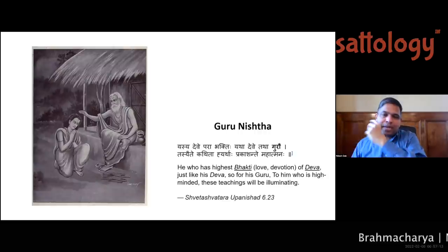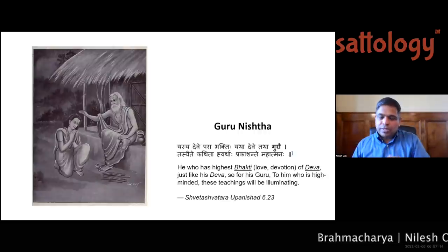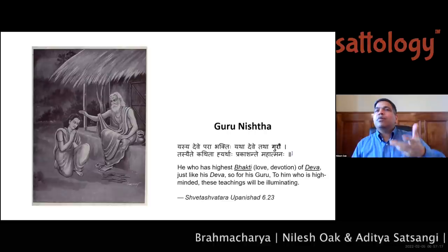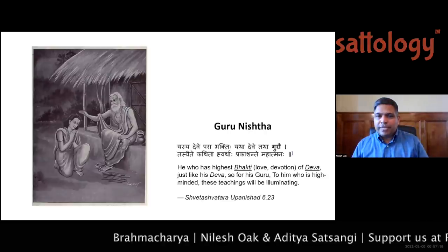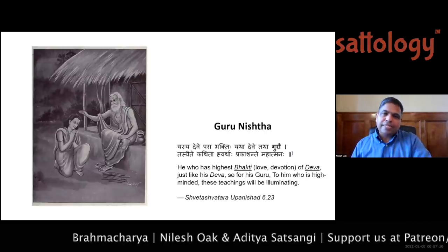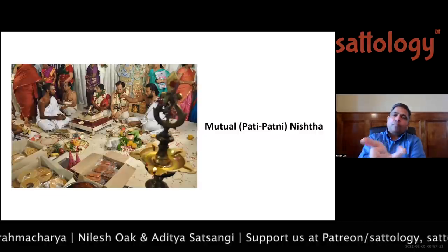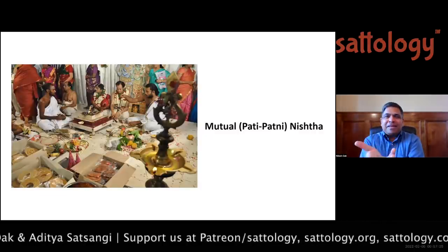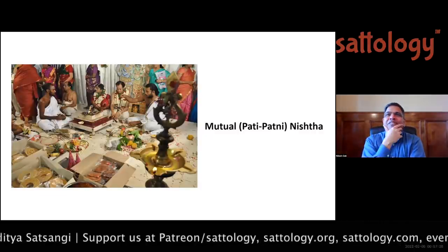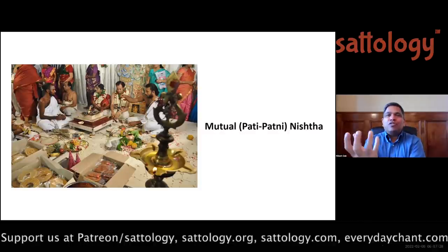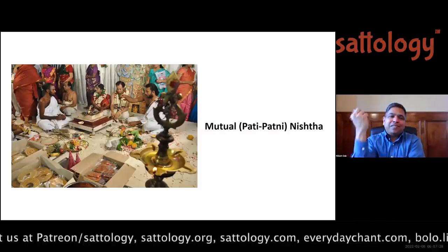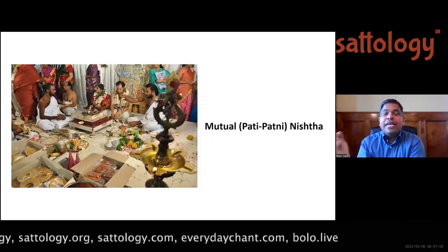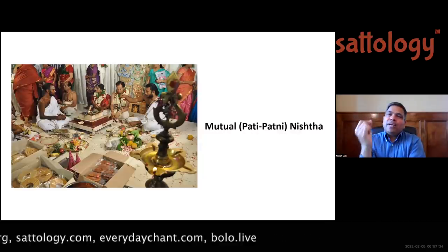When we say the four purusharthas — dharma, artha, kama, moksha — the very idea is that all four are to be achieved here in this life. How vikruta is it to think dharma, artha, kama we will do here, but moksha is only after death? Who told you that? Moksha is also to be achieved right here — if you achieve those qualities described through varna and ashrama.